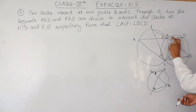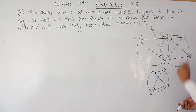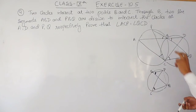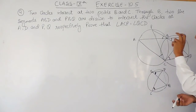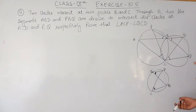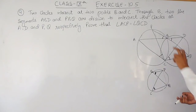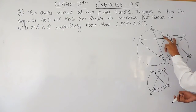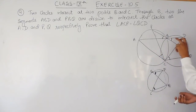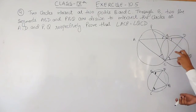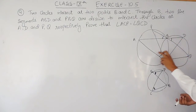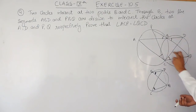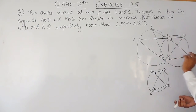And these two angles are equal because these are vertically opposite angles, and we know that vertically opposite angles are equal. If these two angles are equal, this angle is equal to this, and this is equal to this — so obviously these two must also be equal. This is how you are going to solve this one.